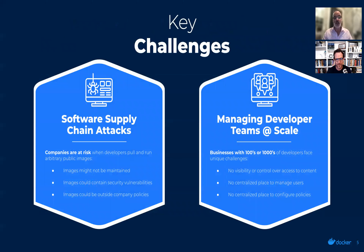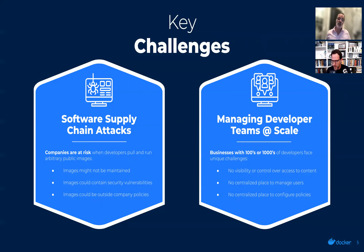Docker has been around for over 11 years, and as customers rely on Docker for major parts of their developer tools and infrastructure, we've increasingly heard two key challenges. Software supply chain attacks are accelerating. Leaders know that to ensure secure applications, it starts with core building blocks which Docker Hub supplies. When developers pull arbitrary public images, it puts the organization at risk. Managing hundreds or thousands of developers at scale presents unique challenges: no visibility or control over access to content, no centralized place to manage users or configure policies.